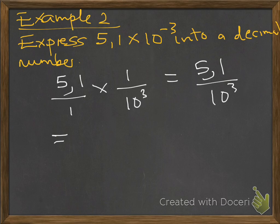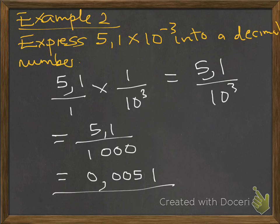5.1 over 10 to the power of 3 is the same as 1,000, therefore it means 5.1 divided by 1,000, which is 0.0051. This will be our final answer. Next we are going to look at adding and subtracting numbers in standard form.